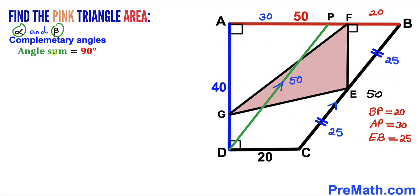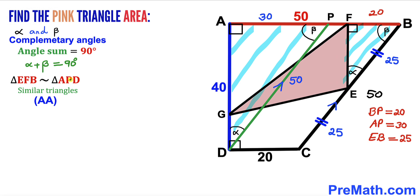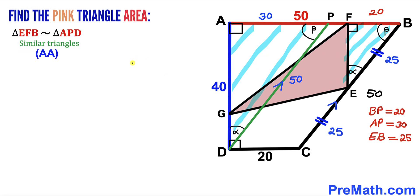Let's define alpha and beta as two complementary angles, so alpha plus beta equals 90 degrees. The corresponding angles in the figure show that triangle EFB shares angles alpha and beta with the larger right triangle APD. By the Angle-Angle similarity theorem, triangle EFB is similar to triangle APD.